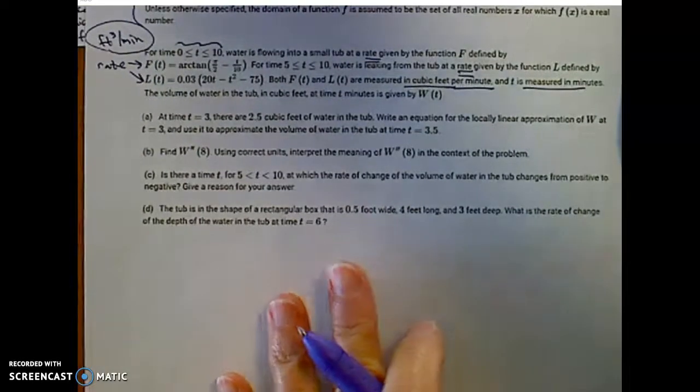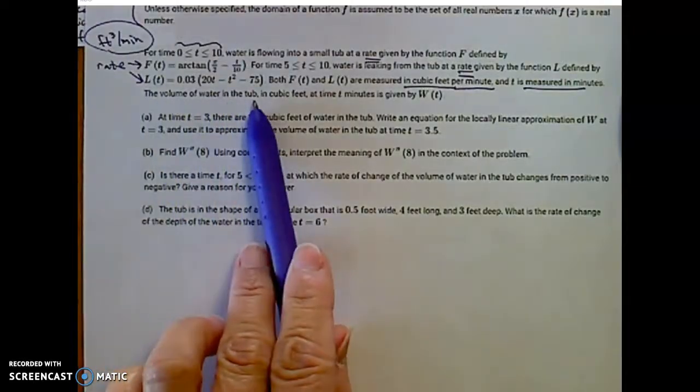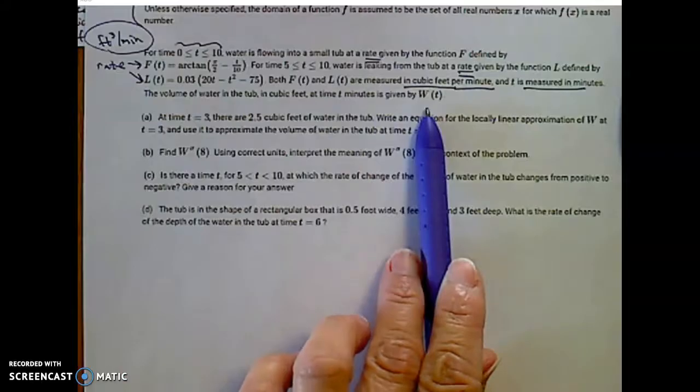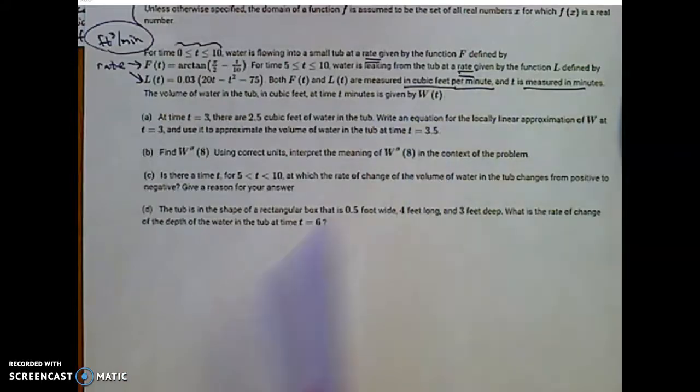Since it's a rate, that will be cubic feet per minute for those two functions. The volume of water in the tub at any moment is given by a function w of t.